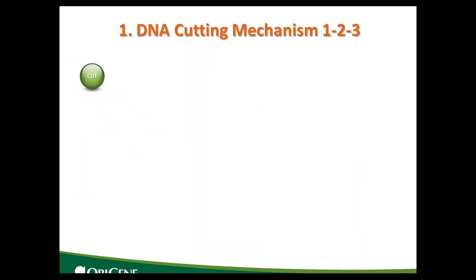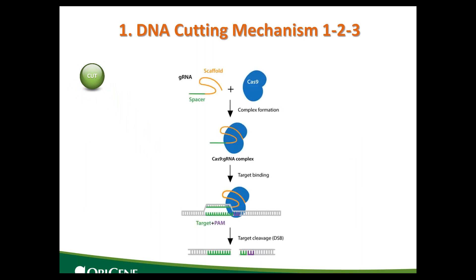If we talk about the CRISPR cutting mechanism, it can be very straightforward — just like steps 1, 2, 3. Step 1 is to form a complex with Cas9 and gRNA. Step 2 is the complex binding to the target genome. Step 3 is to cut the substrate and leave a double strand break.